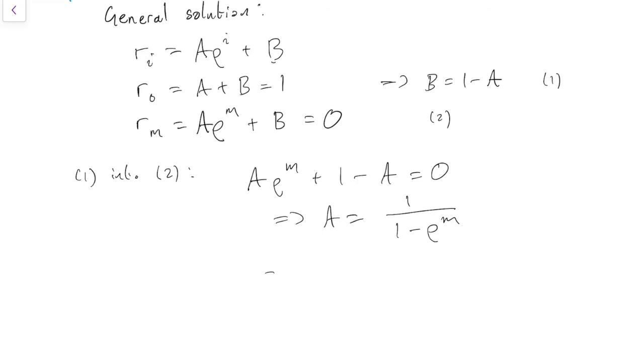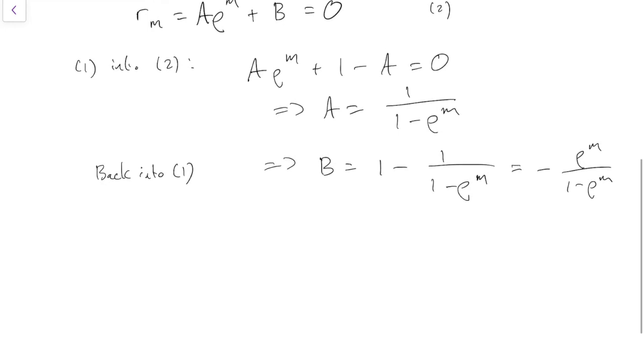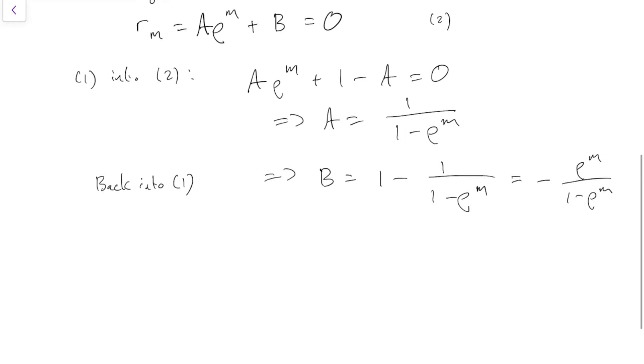That's a solution for a, and therefore substituting that back into equation 1, we get b equals 1 minus 1 over 1 minus rho to the m. Again, if you need just a second to check the algebra, that's fine.